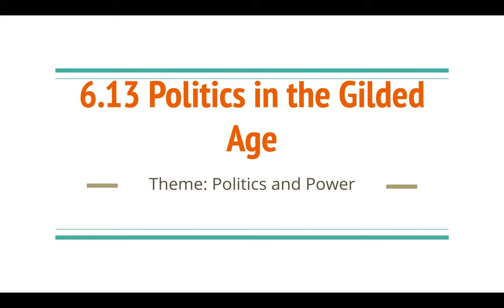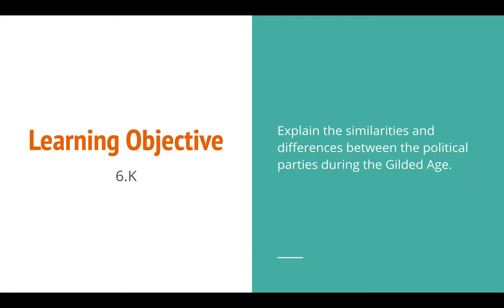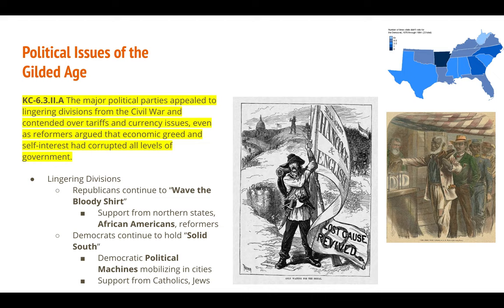Welcome back to lecture number 58. Today we are talking about historical topic 6.13, politics in the Gilded Age, and our theme is politics and power. One learning objective for the day: explain the similarities and differences between the political parties during the Gilded Age. The major political parties appealed to lingering divisions from the Civil War and contended over tariffs and currency issues, even as reformers argued that economic greed and self-interest had corrupted all levels of government.